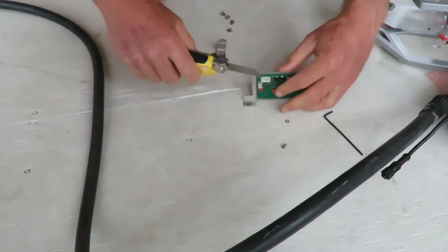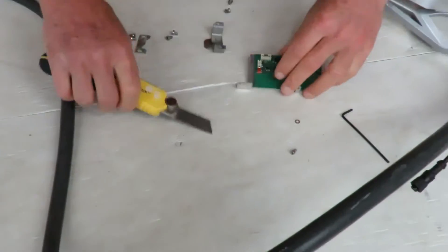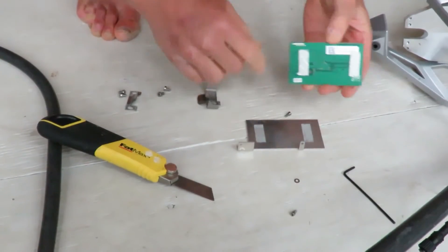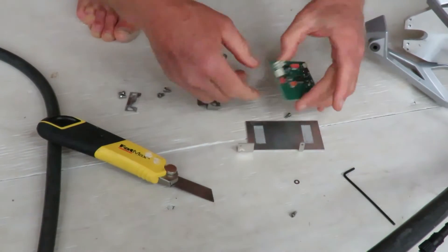Using a razor blade utility knife, we can separate the board from the backing plate. There are two pieces of double stick tape that mount the board to the plate.